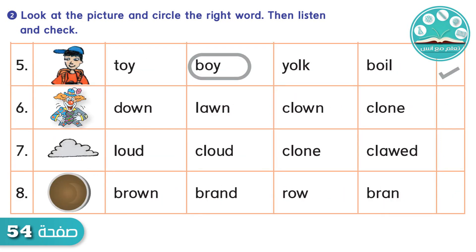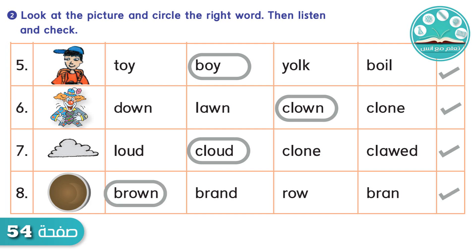Number 5: Boy, boy. Did you circle boy? B-O-Y. Number 6: Clown, clown. Did you circle clown? C-L-O-W-N. Number 7: Cloud, cloud. Did you circle cloud? C-L-O-U-D. C-L-O-W-E-R. Number 8: Brown, brown. Did you circle brown? B-R-O-W-N.